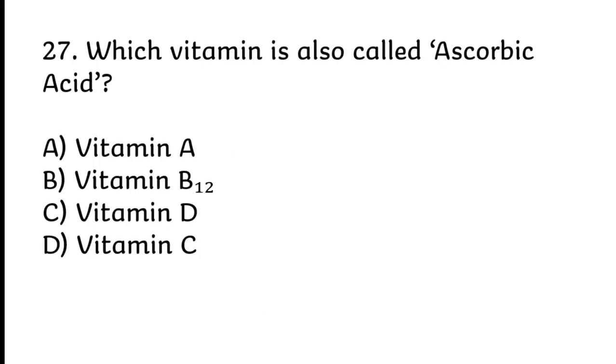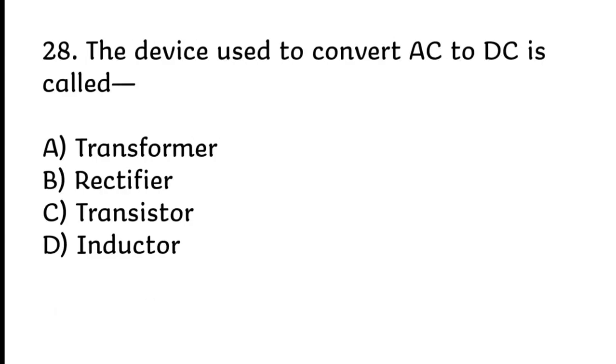Which vitamin is also called ascorbic acid? Correct answer is D, vitamin C. The device used to convert AC to DC is called a rectifier. Correct answer is B, rectifier.